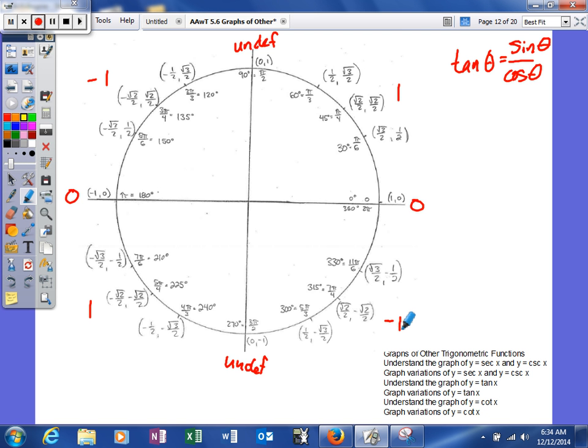So for our tangent, we're actually going to start here and then list our graph from here to here. So that's the part that we're going to normally graph. So that's our general one cycle of our graph is from there to there.